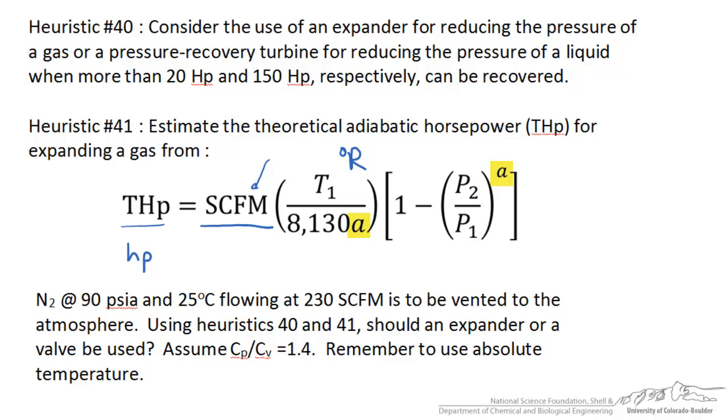Lastly is this A term that you see here. A is a ratio of the gas heat capacity ratio as seen here, where K, the gas heat capacity ratio, is given down here. So that is pretty much all the information that is needed for this problem. We could move forward and calculate the theoretical adiabatic horsepower.